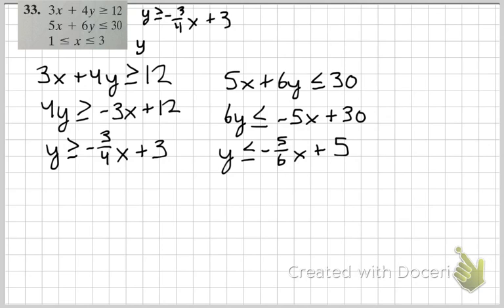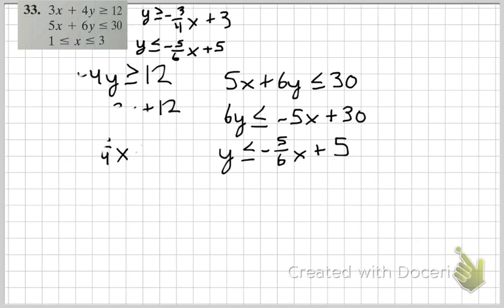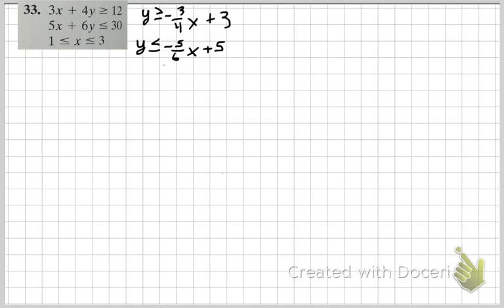And that's my second equation. Y is less than or equal to negative 5 sixths x plus 5. And my last inequality is already graphable. Those are just going to be vertical lines since it's x equals. Let me get my xy axis set up so we can graph.